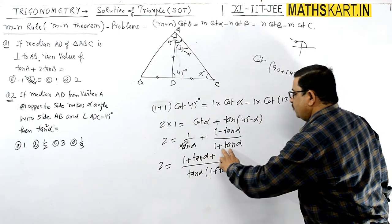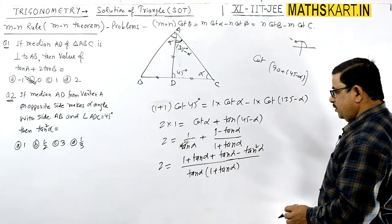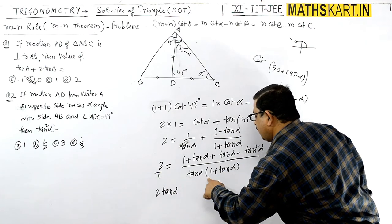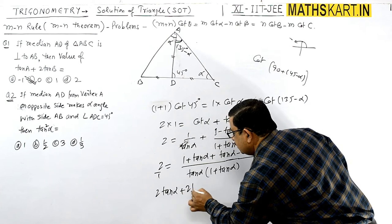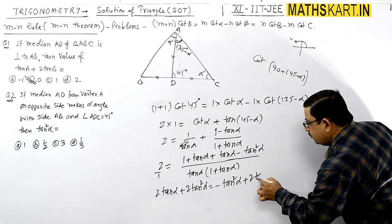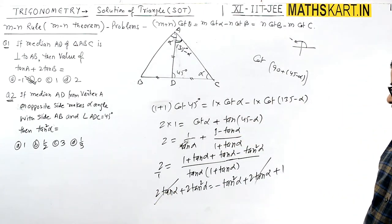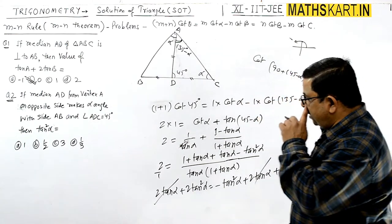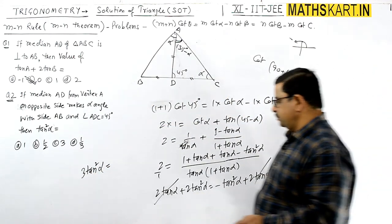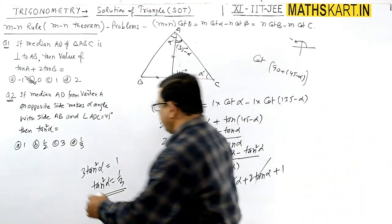Taking LCM and simplifying: 2 = [1+tan(α) + 1−tan(α)] / [tan(α)·(1+tan(α))], which gives 2·tan(α)·(1+tan(α)) = 2. Cross-multiplying: 2·tan(α) + 2·tan²(α) = 2·tan(α) − tan²(α) + ... After cancellation, 3·tan²(α) = 1, so tan²(α) = 1/3. Option D is correct.